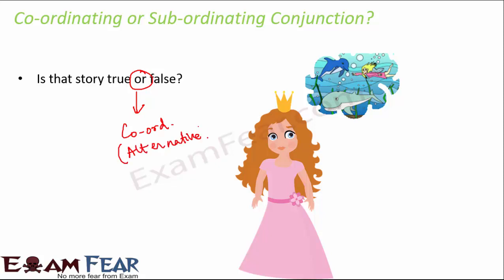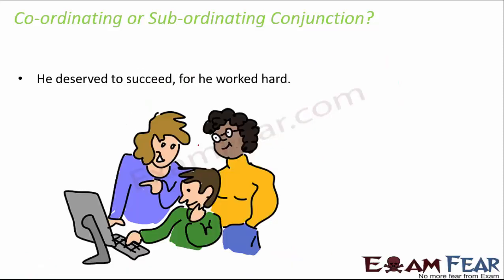Next example: 'He deserved to succeed, for he worked hard.' The word 'for' gives reasoning — it shows why he deserved to succeed. So this is again a coordinating conjunction. The type of coordinating conjunction here is causative.